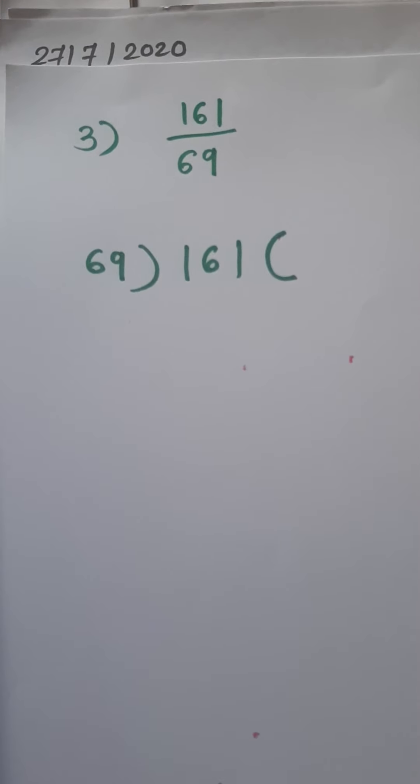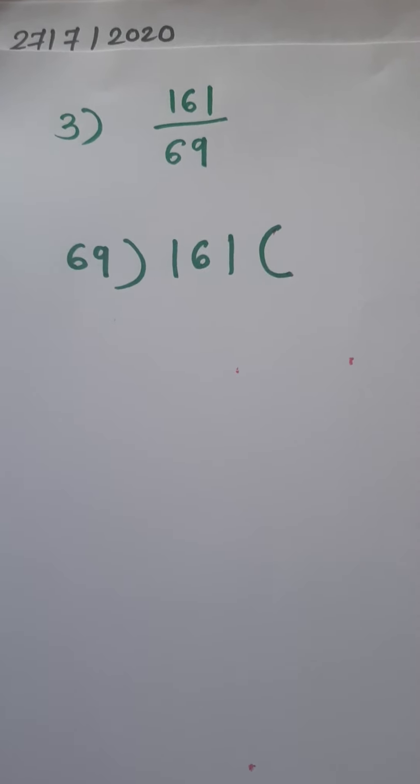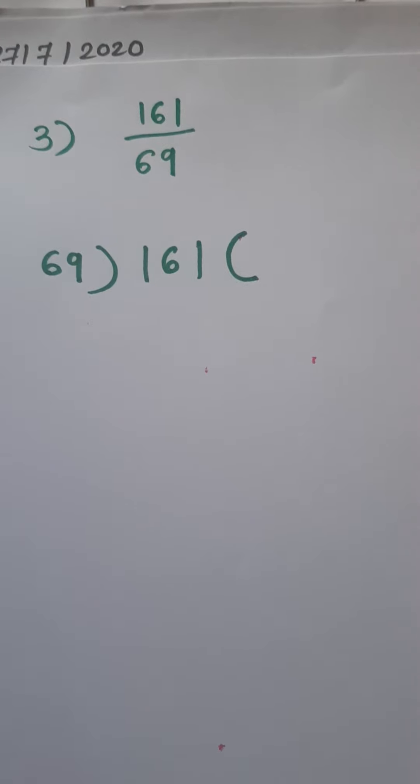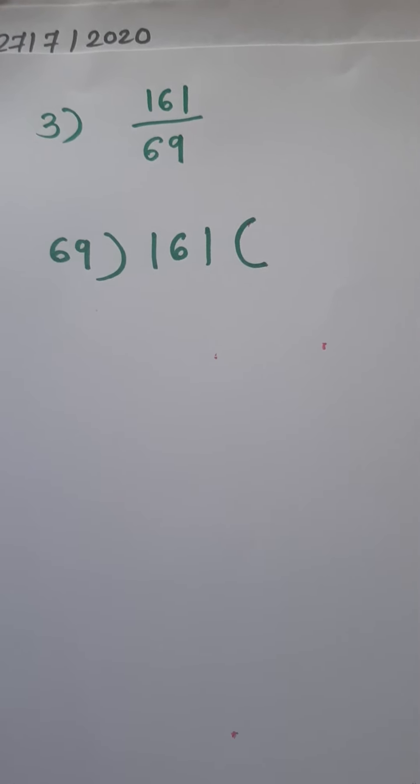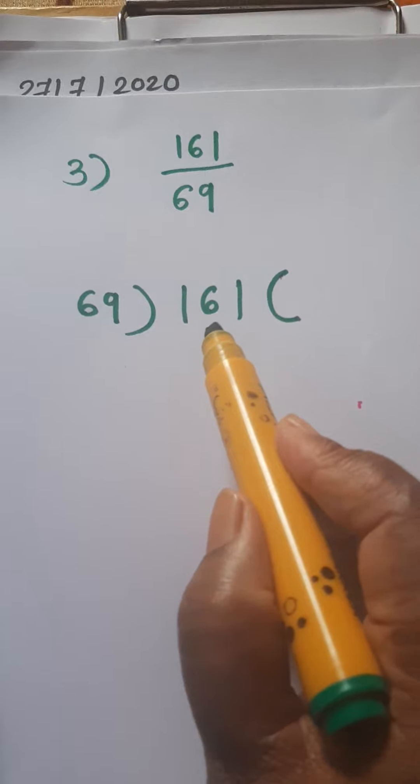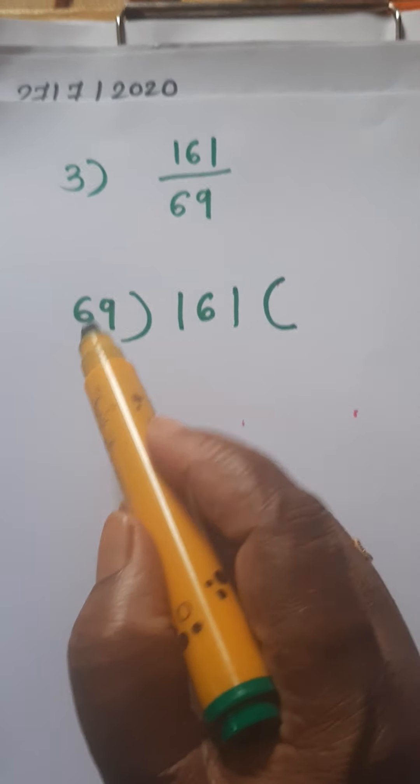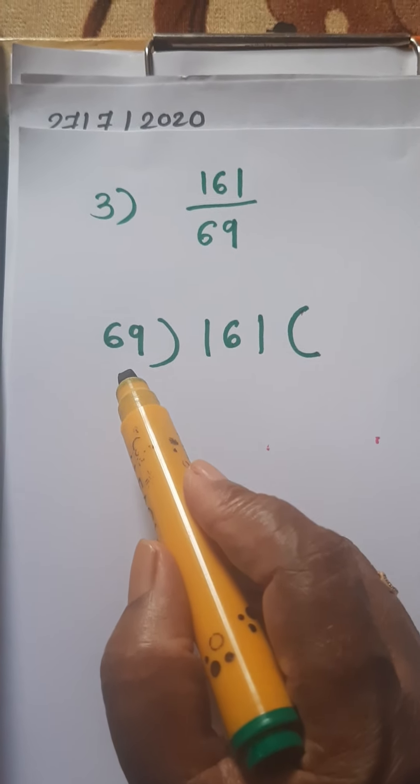As you know, the big number we are taking as the dividend and the small number as the divisor. So we have arranged the problem like this: 161 divided by 69.